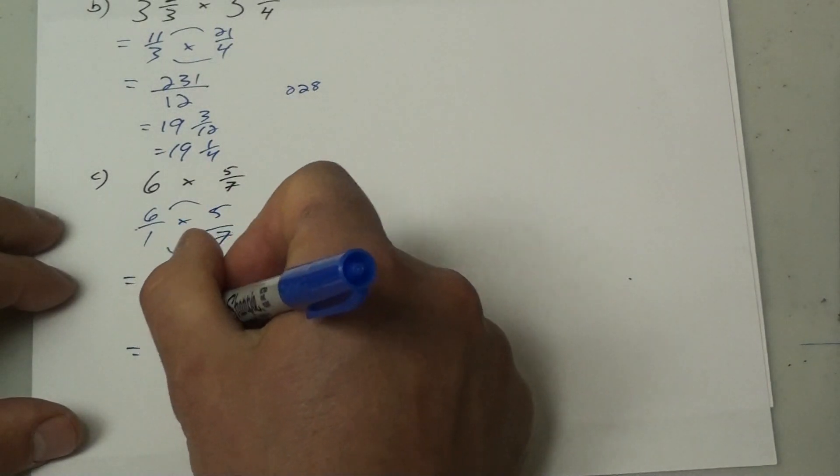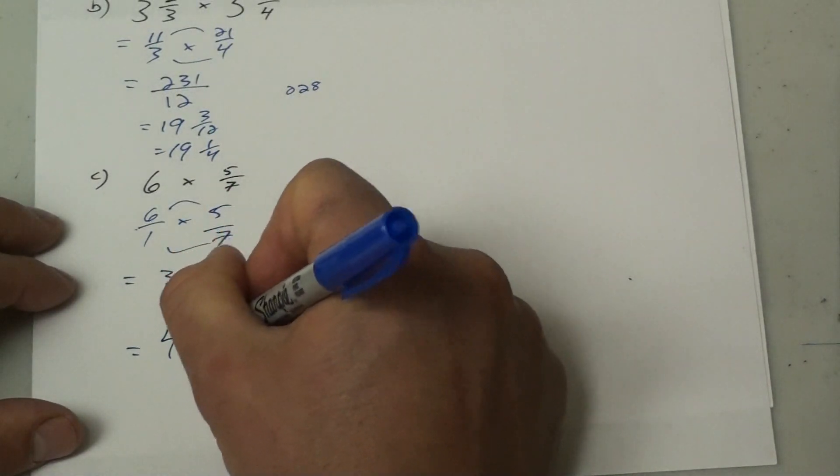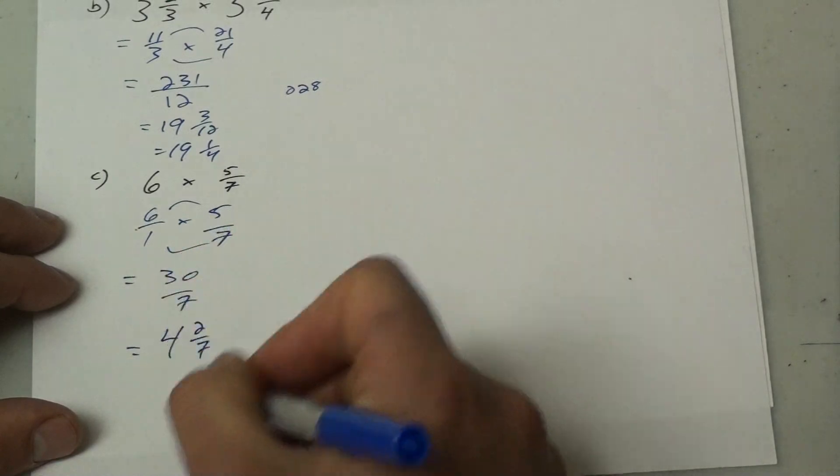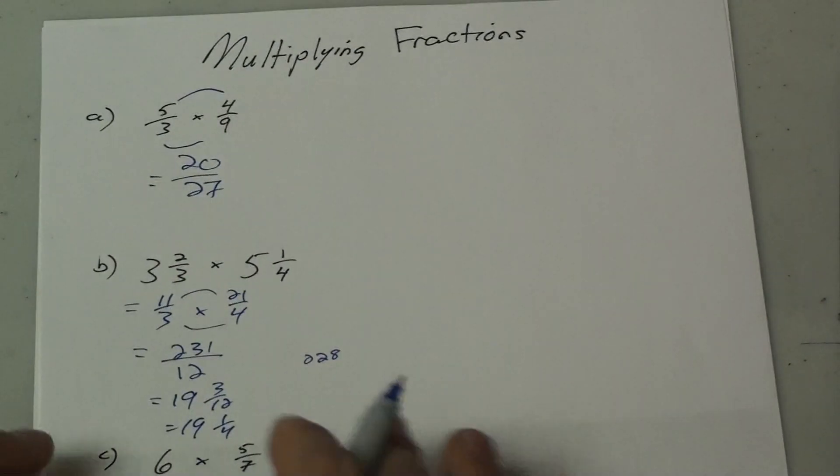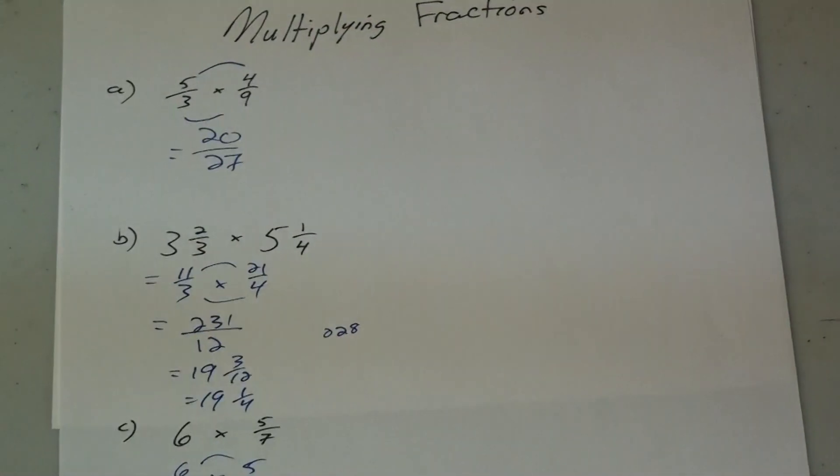So 30 over 7 turns into 4 and 2 over 7 because 7 goes into 30 four times. That's 28. And so you'd have 2 left over. Okay. So a short little lesson on how to multiply fractions. Thank you very much.